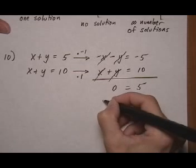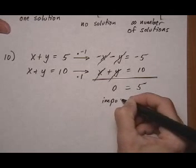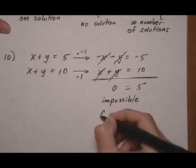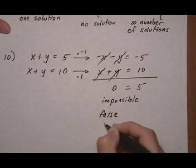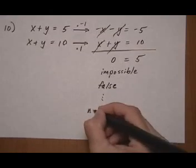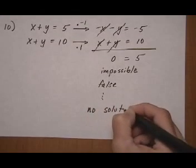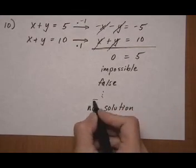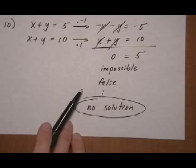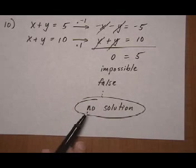Well, 0 equals 5 is impossible, or false. Think of it either way. No matter which way you think of it, it means there is no solution to this problem. So if you come up with a false answer after you do the elimination method or a false statement, the final answer is no solution for the system.